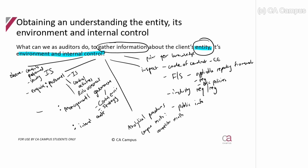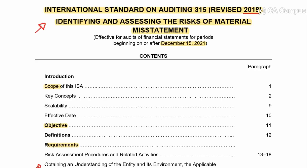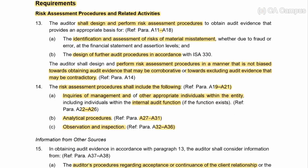Let's go into ISA 315 to the beginning of the requirements, where we look at the risk assessment procedures, just so you can see they are literally listed there. In ISA 315, the first of the requirements is risk assessment procedures and related activities. Going straight to paragraph 13: the auditor shall perform risk assessment procedures so that we are able to identify and assess the risks of material misstatements, and then to design further audit procedures because of the risks we've identified.